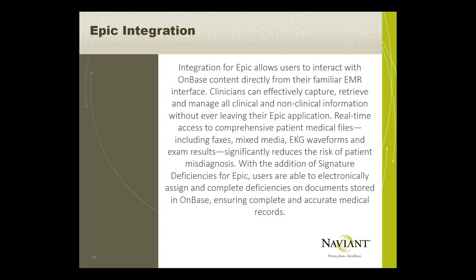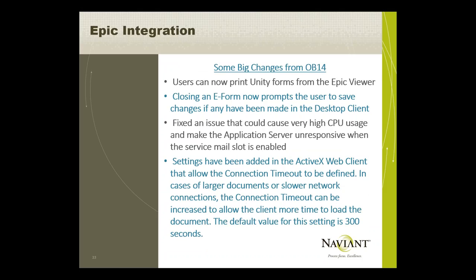Epic has been integrated with OnBase for at least ten years. Every time OnBase does an upgrade, quite a few improvements are added — this last time around there were approximately 360 enhancements, tweaks, bug fixes, or improvements. Some of the main upgrades in OnBase 15 include: users can now print Unity forms from the Epic viewer; closing an eForm now prompts the user to save changes if any have been made in the desktop client; and there is a constant effort to ensure the integration runs smoothly and addresses all issues.